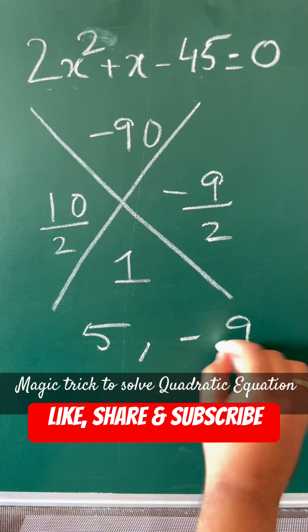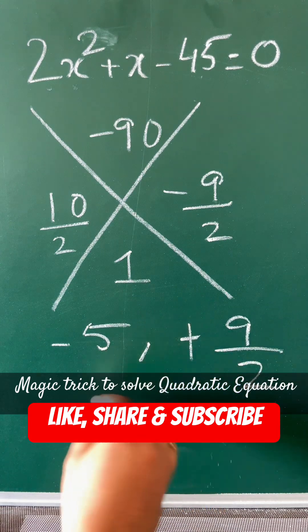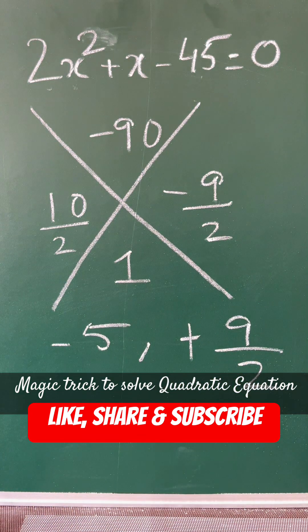Now reverse their signs. This was +5, so it becomes -5, and this becomes +9/2. This is the answer to the quadratic equation: x = -5 or x = 9/2. Thanks for watching!